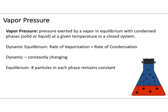A certain number of particles will enter the upper area of the container above the liquid phase. As vapor production reaches a certain point, a dynamic equilibrium is achieved — where the rate of vaporization equals the rate of condensation. The process goes back and forth continuously between liquid and gas.